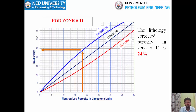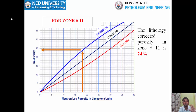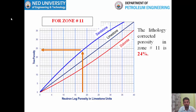Porosity estimation from the neutron log requires prior knowledge of lithology — the same concept we saw with the density log. In the density log you need matrix density before calculating porosity. Similarly, here you identify lithology first, then correct the reported neutron porosity to the true porosity for that lithology.